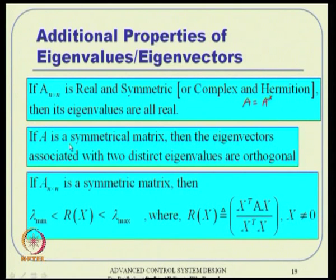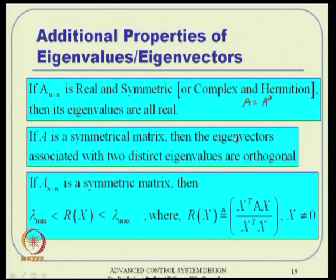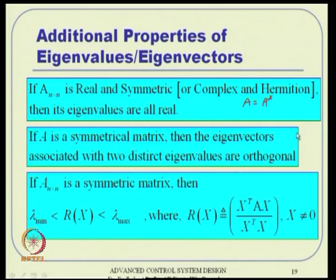Another associated property: for a symmetric matrix A, eigenvectors corresponding to two distinct eigenvalues lambda_1 and lambda_2 are orthogonal. So if lambda_1 and lambda_2 are distinct real eigenvalues of a symmetric matrix, the corresponding eigenvectors are guaranteed to be orthogonal.